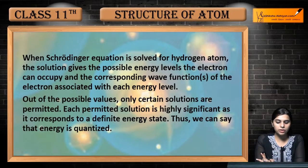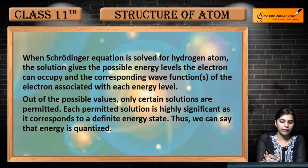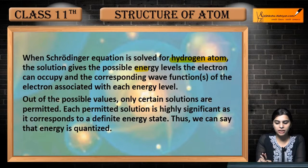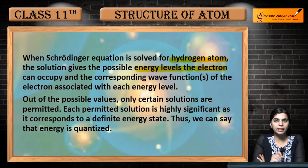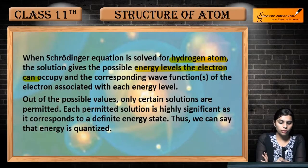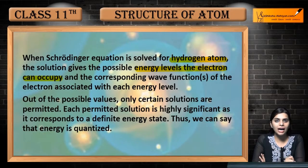When the Schrödinger equation is solved for the hydrogen atom, the solution gives the possible energy levels that the electron can occupy — where the electron can come and where it can be accommodated.